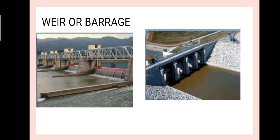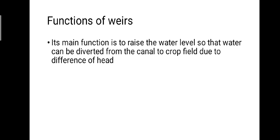Firstly, we are going to deal with the weir or barrage, which is the first component of a diversion headwork. A weir is a solid obstruction placed across the river, and a barrage is practically a low weir with an adjustable gate over this low weir. The main function of a weir is to raise the water level so that water can be diverted from the canal to the crop field due to difference of head.